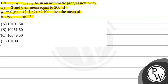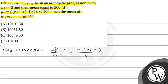This question has four options. We will use the key concept: the sum of n natural numbers given by summation from i equals 1 to n of i, equals n times (n+1) divided by 2. And the sum of squares of n natural numbers, summation from i equals 1 to n of i² equals n(n+1)(2n+1) divided by 6. We will use both these properties to simplify the question.